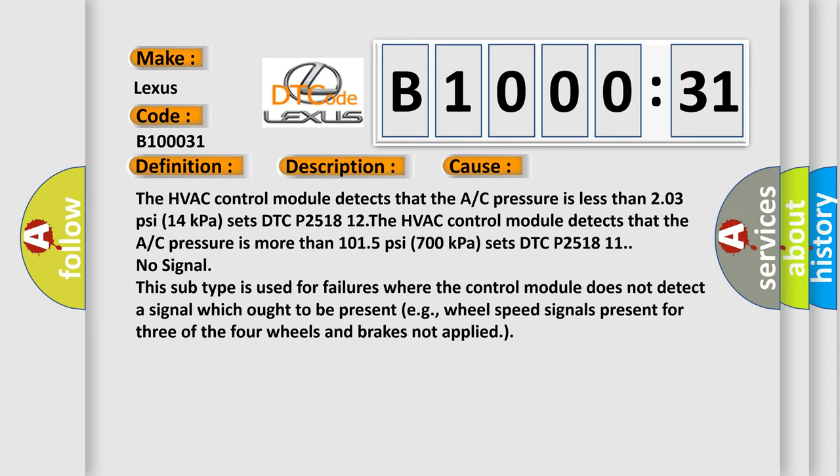The HVAC control module detects that the A/C pressure is more than 1015 PSI (700 kPa) and sets DTC P251811.